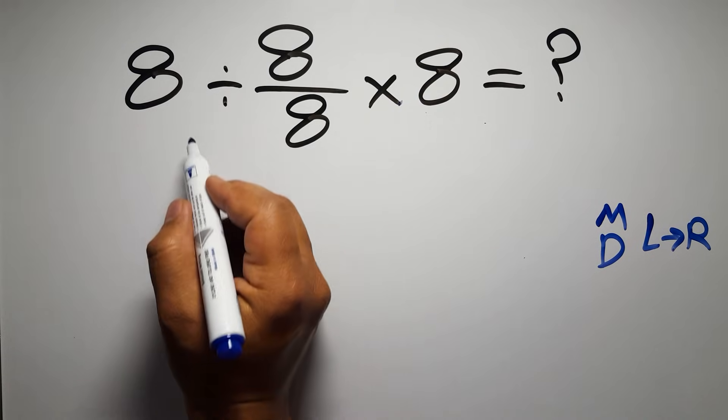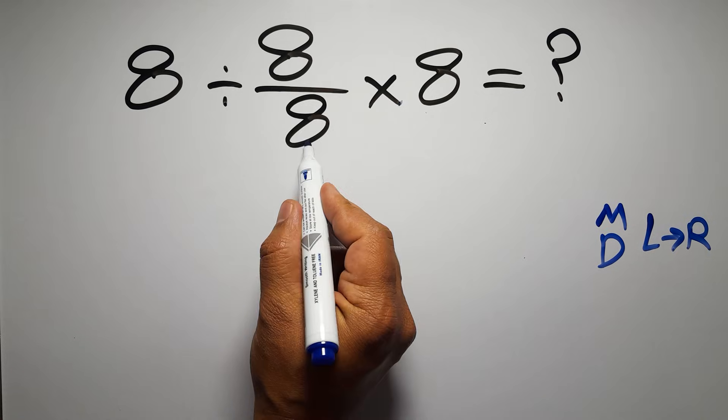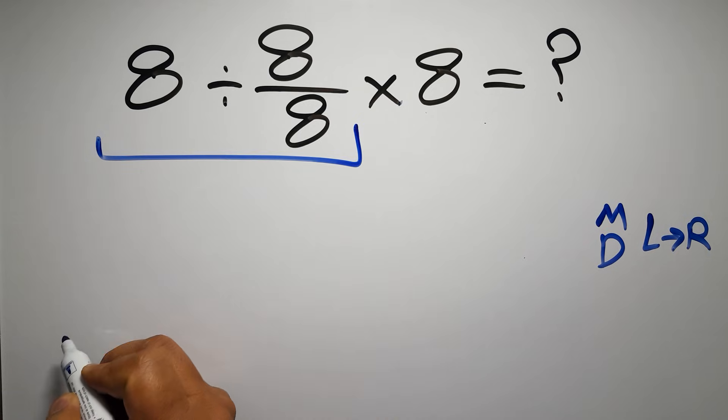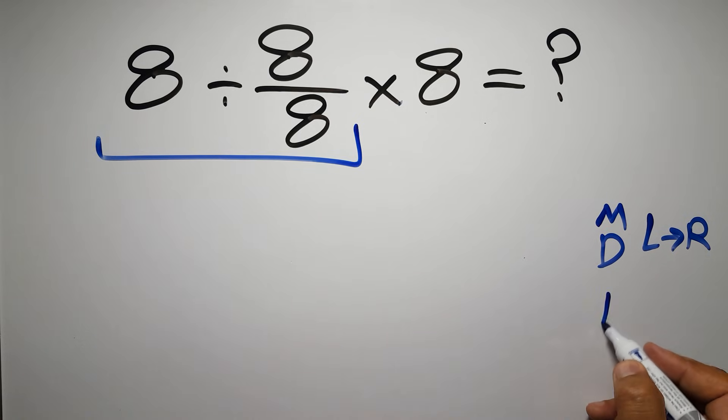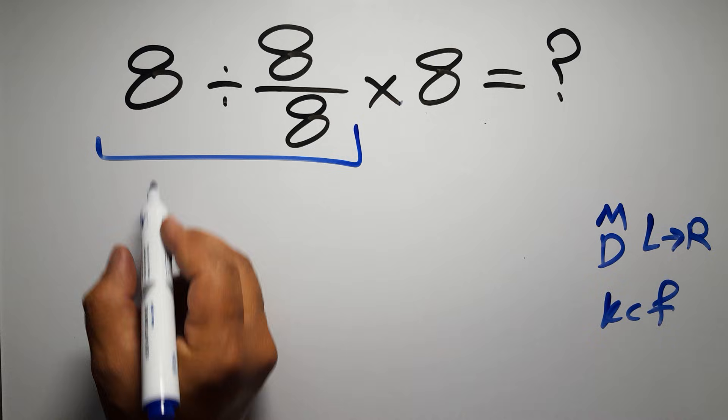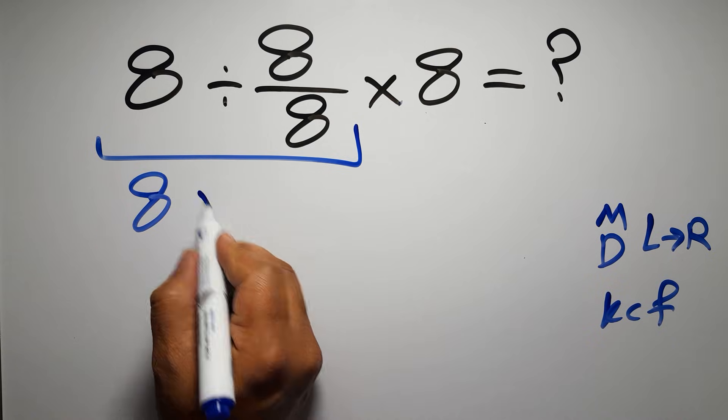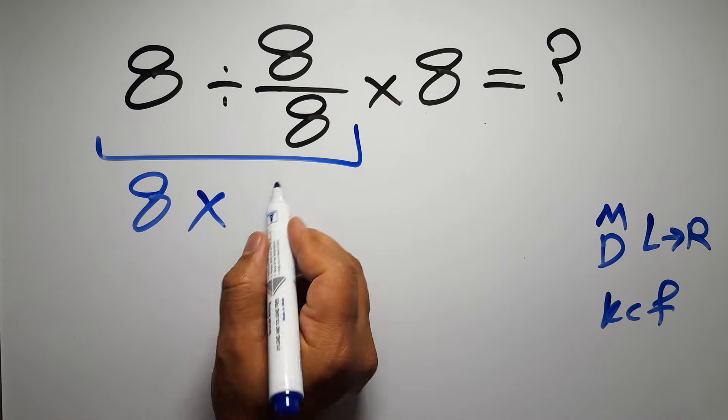So first this division: 8 divided by 8 over 8. According to the KCF rule, K stands for keep, C stands for change, and F stands for flip. We can write, keep the first fraction, change division to multiplication, and flip the second fraction.